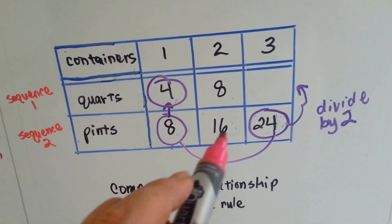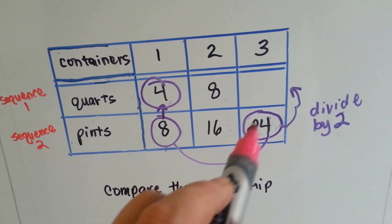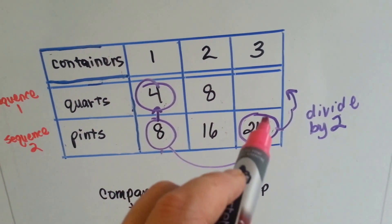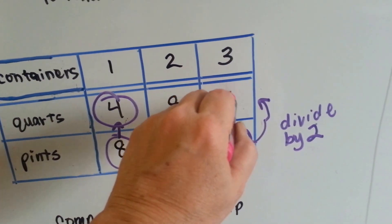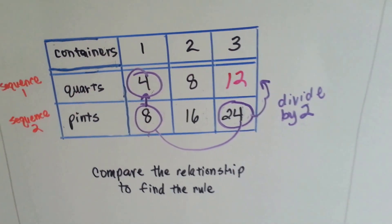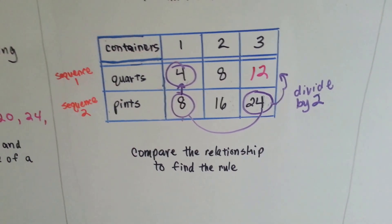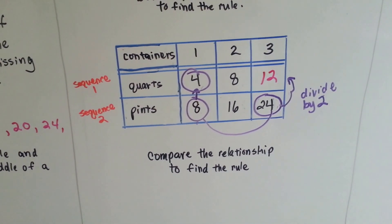8 divided by 2 is 4. 16 divided by 2 is 8. So that means 24 divided by 2 would be 12. And we'd be able to figure out what the missing number is. So we compare the relationship to find the rule.